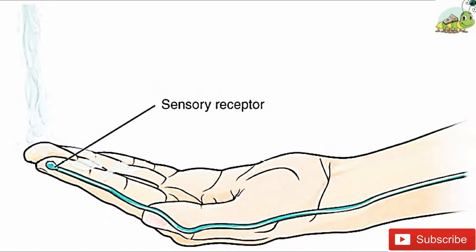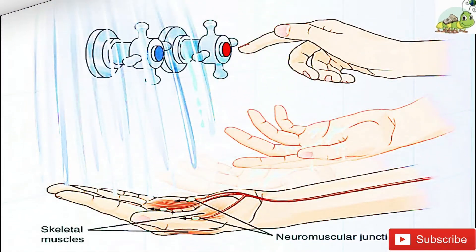If the stimulus is strong, the voltage of the cell membrane will change enough to generate an electrical signal that will travel down the axon. You have learned about this type of signaling before with respect to the interaction of nerves and muscles at the neuromuscular junction. The voltage at which such a signal is generated is called the threshold, and the resulting electrical signal is called an action potential.